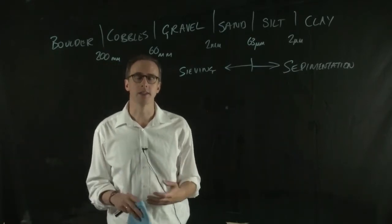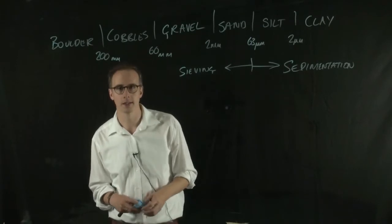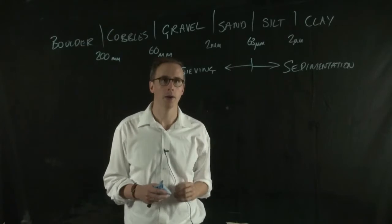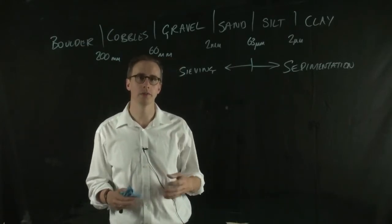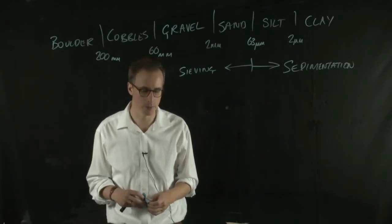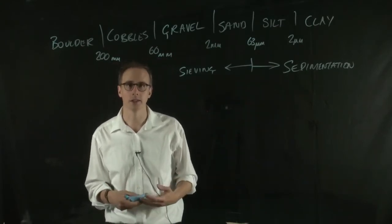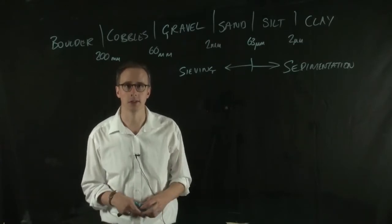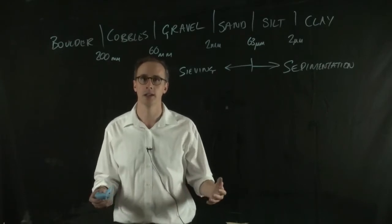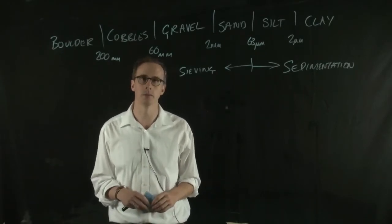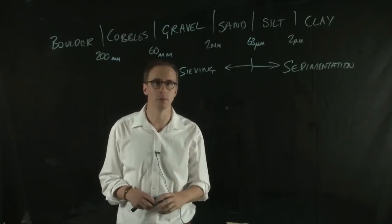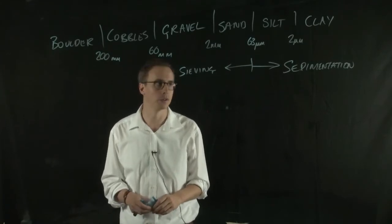The way we represent that data is on a particle size distribution graph, and I'm just going to draw one up now. There are a number of different ways of representing the data. I've put on my website, which is in the link below in the description, a ternary diagram that some soil scientists use to describe particle sizes within soils. You might be able to see that there's a slight difference in the way that geotechnical engineers represent particle size distribution.